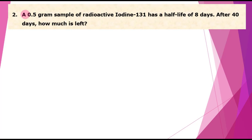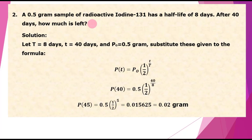Moving on to number 2. A 0.5 gram sample of radioactive iodine-131 has a half-life of 8 days. After 40 days, how much is left? Solution: we plug in capital T equals 8 days, small t equals 40 days, and P sub 0 equals 0.5 gram.